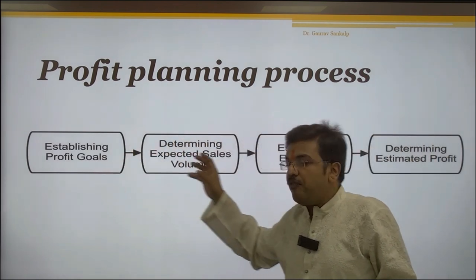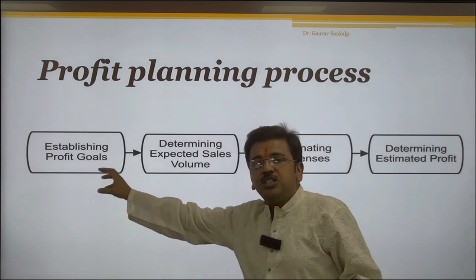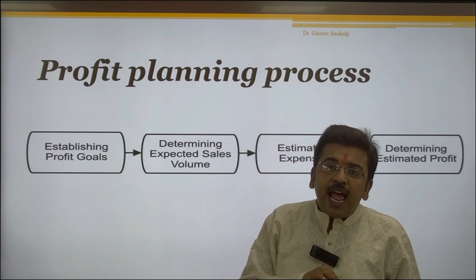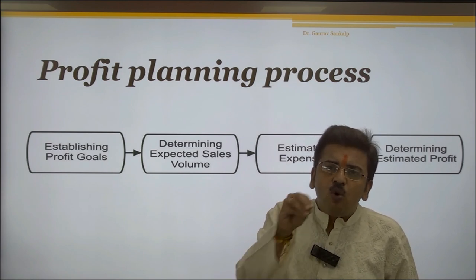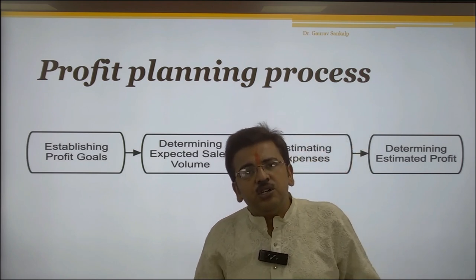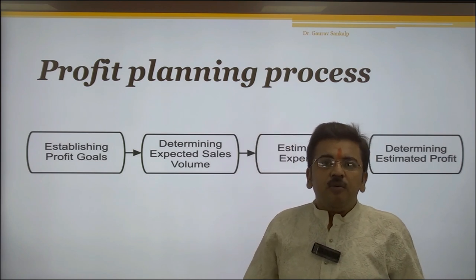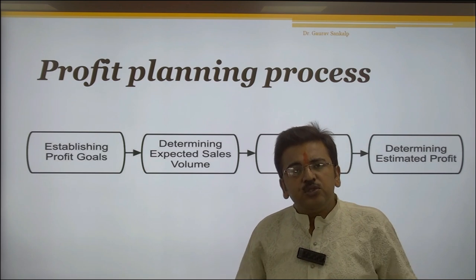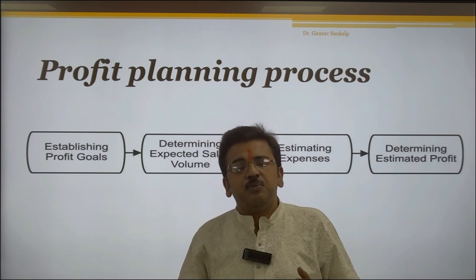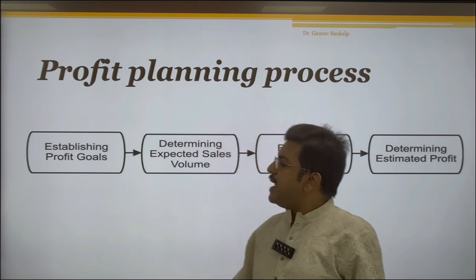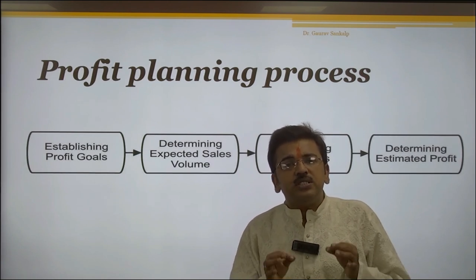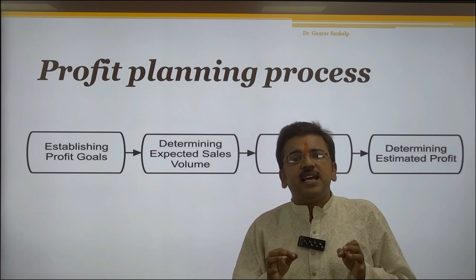There are four steps by which we can plan the profit planning process. The first one is establishing profit goals — according to the product, what is the cost and what profit is required. For any organization, four important pillars are very important: marketing, finance, human resource management, and product development. Apart from this, logistics, transportation, and supply chain management also come here. Each step should be properly done so we can achieve our profit.